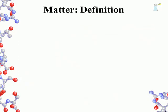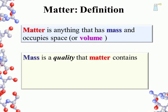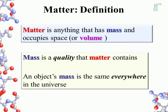Matter: a definition. Matter is anything that has mass and occupies space, and that is volume. You and I have mass. Everything that we can touch has mass. Mass is a quality that matter contains. Mass is a very basic fundamental property of matter. Importantly, an object's mass is the same everywhere in the universe.